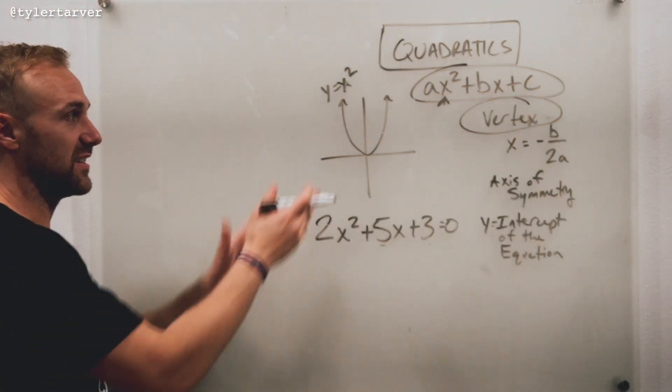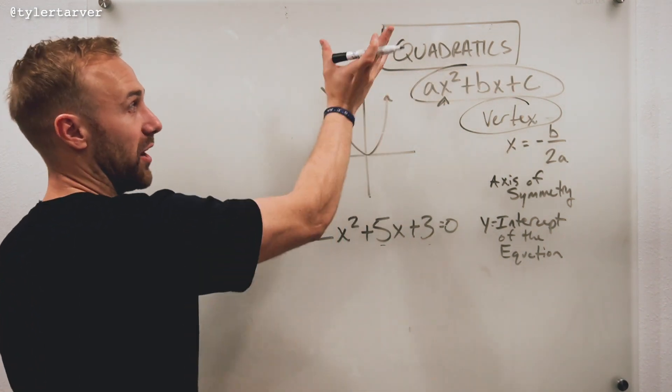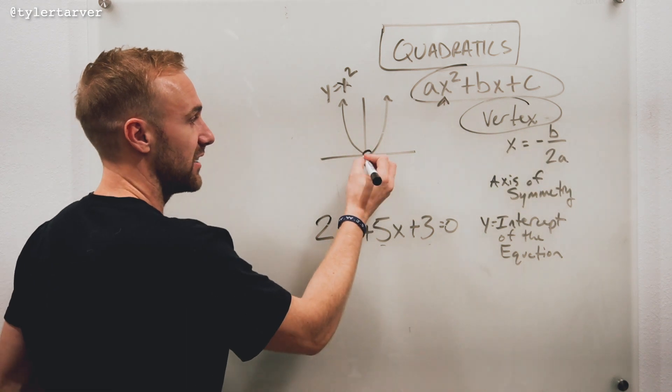Here's what the vertex is. This is the drawing of a quadratic. Okay? Sometimes they're going to be like open upward. Sometimes they're open downward. What a vertex is, that is right there.